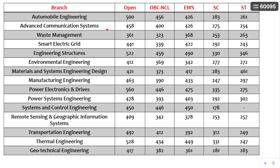Now let's enter into the cutoffs of NIT Warangal. The first branch is Automobile Engineering — the open cutoff is 500 GATE score. I have tabulated each and every branch with category-wise data: Open, OBC Non-Creamy Layer, EWS, SC, and ST. For Advanced Communication Systems, the open cutoff is 458.